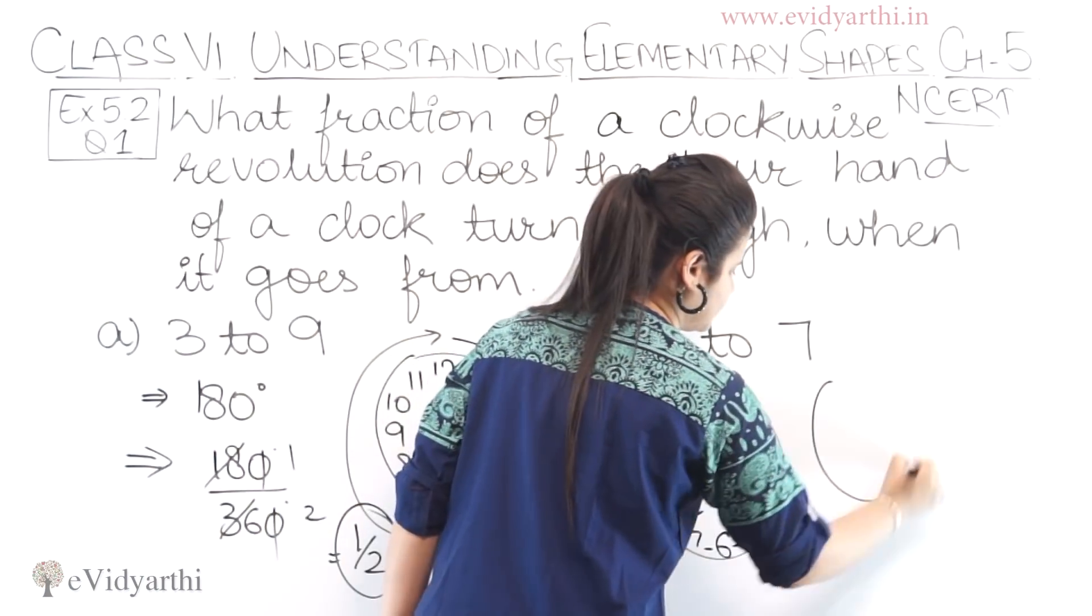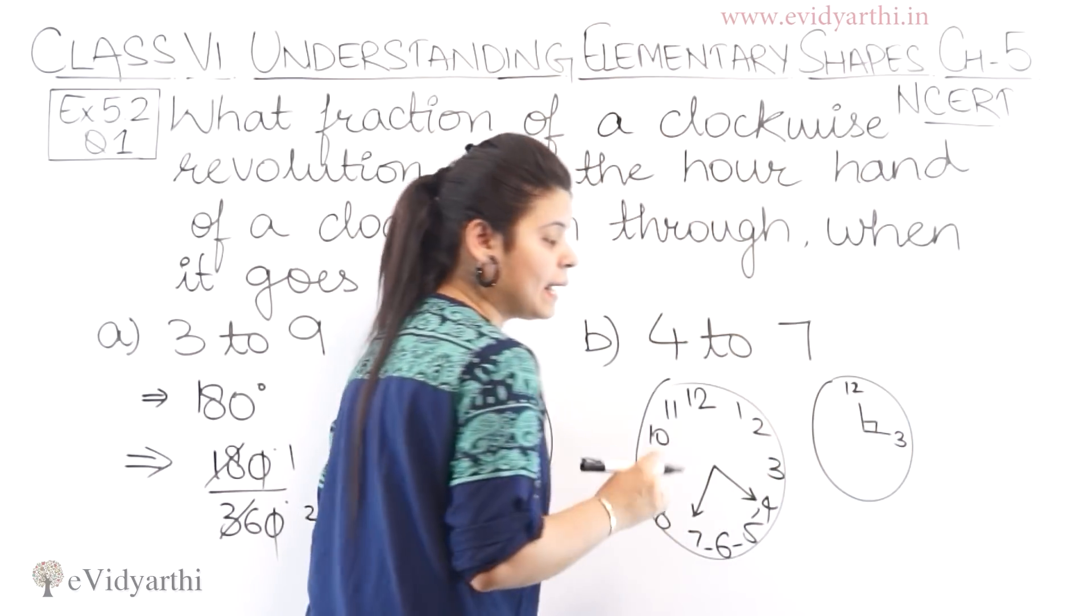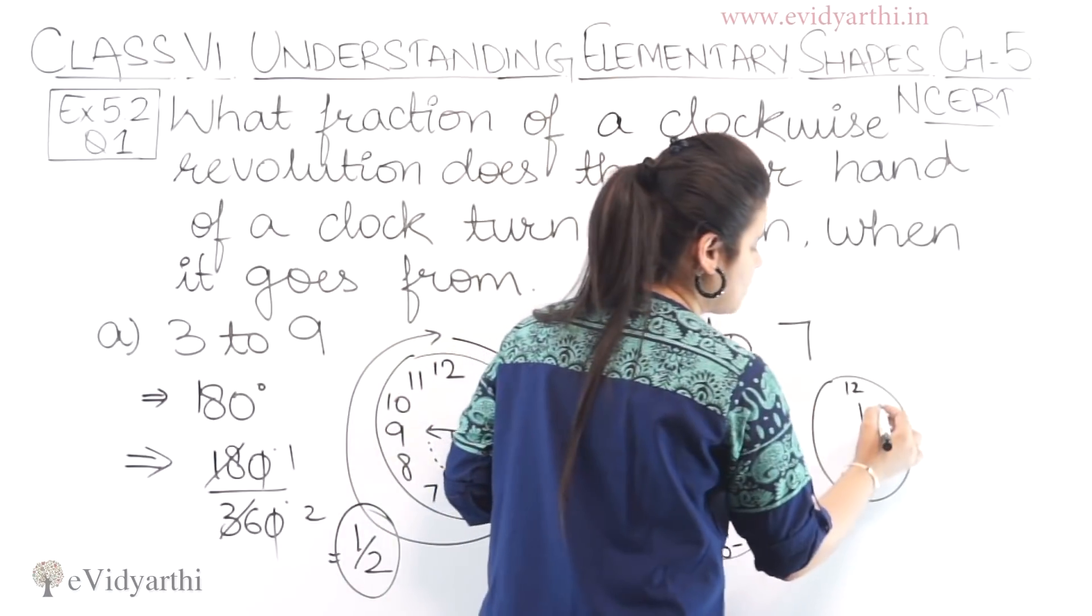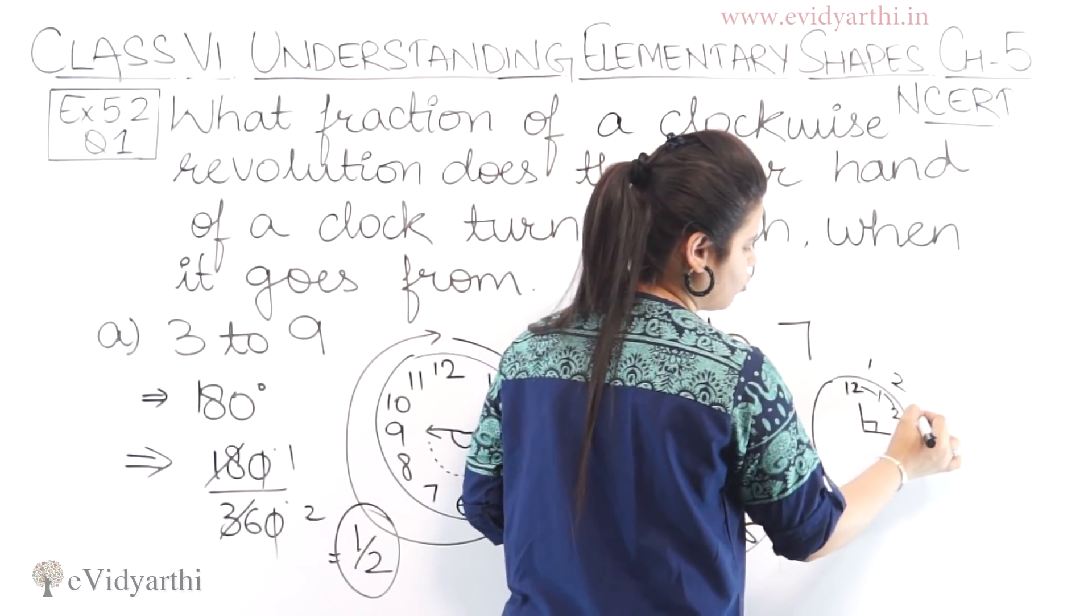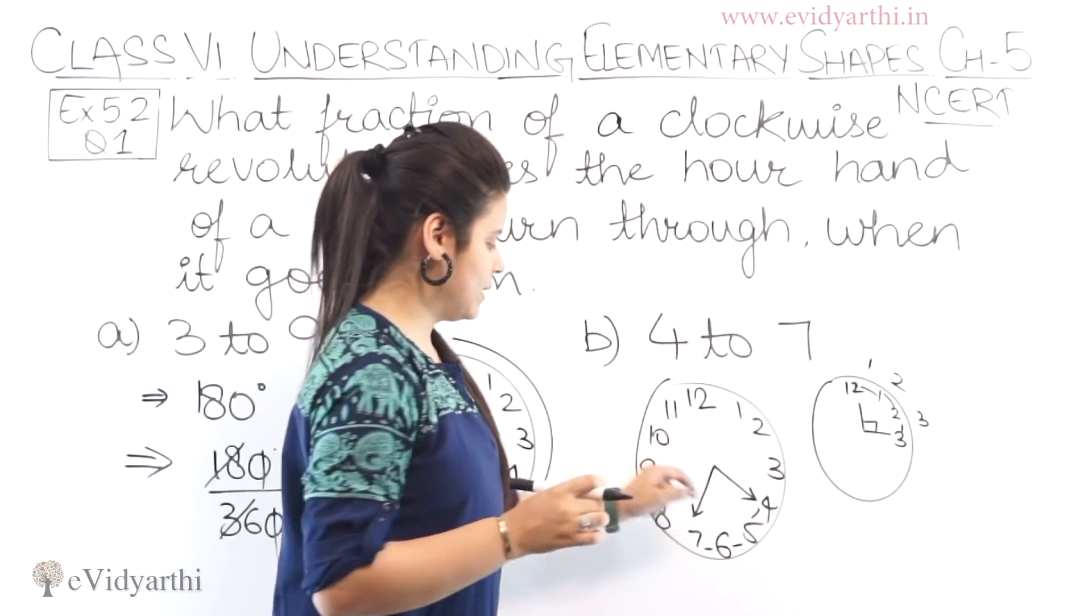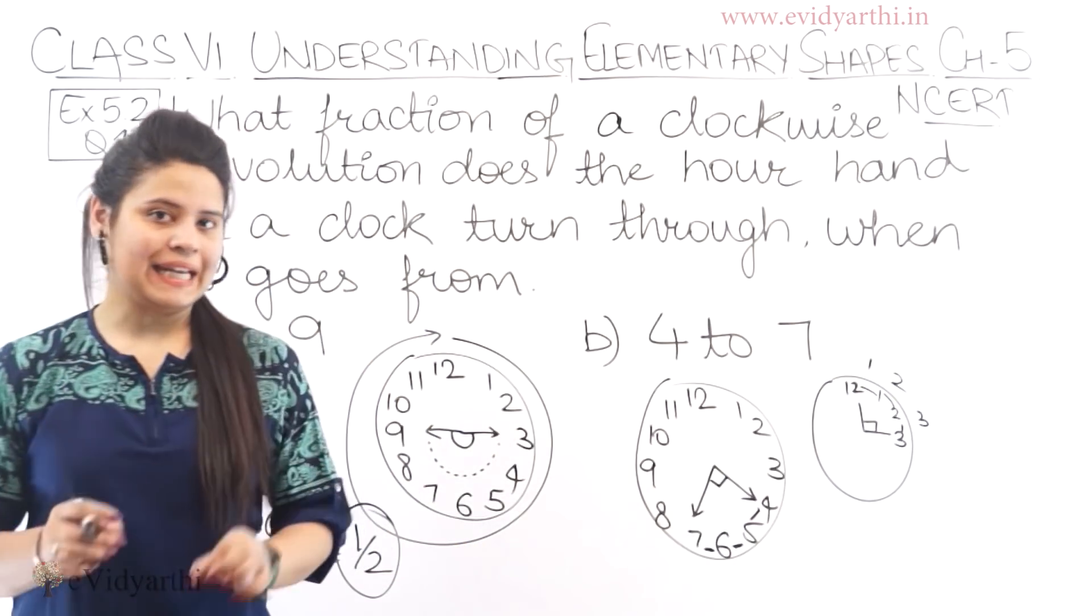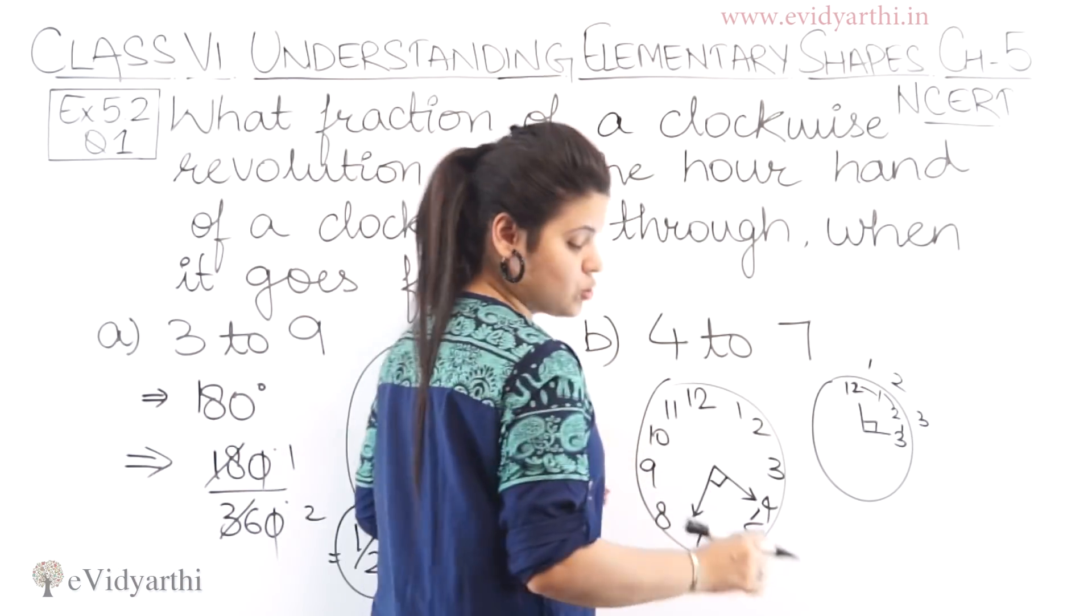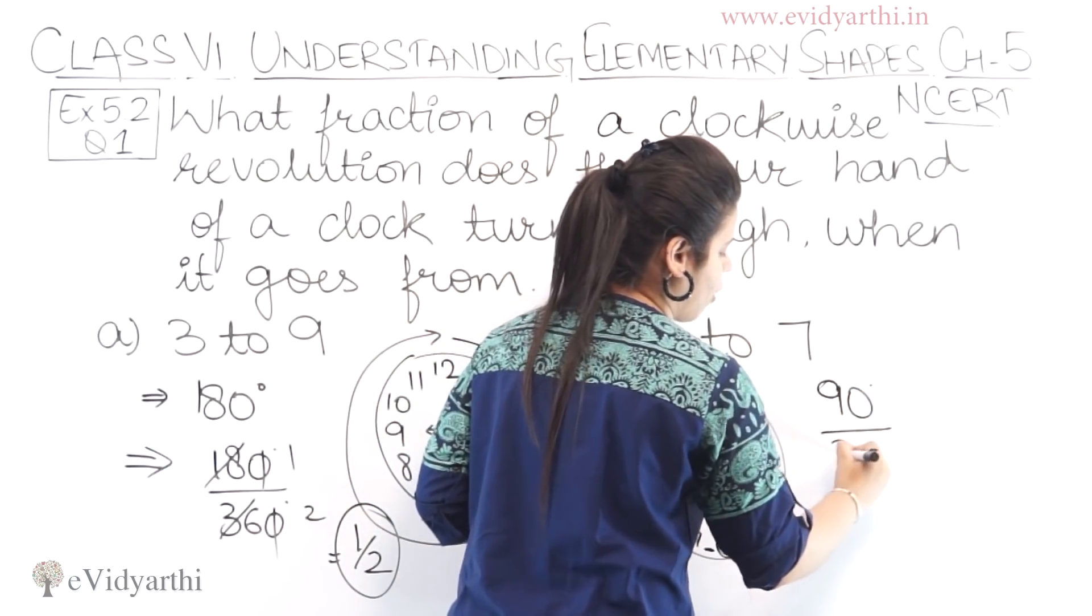Now, this will be 90 degree. Let's see. 12 and 3 ke bich me agar angle bana di ho. Clearly, we can see here. How much is it? 90 degree ka angle hai. Right? So, this angle is 90 degree. So, if we have to find the fraction,